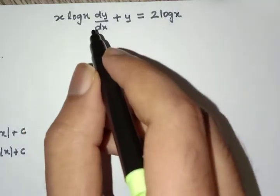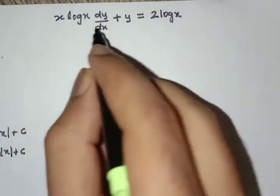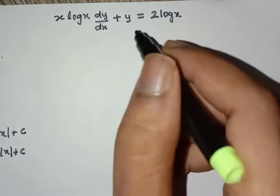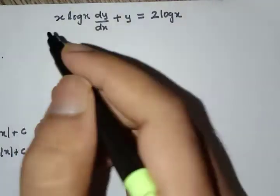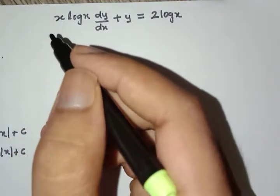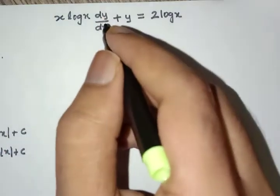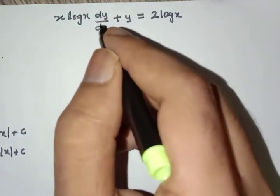Solve the differential equation x log x dy by dx plus y is equal to 2 log x. First thing which we need to do is to make the coefficient of dy by dx equal to 1.